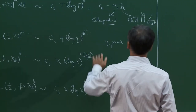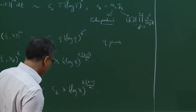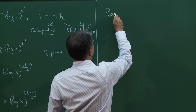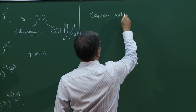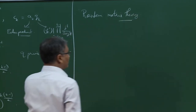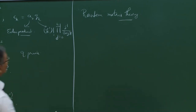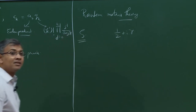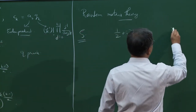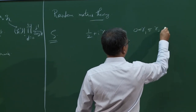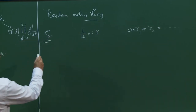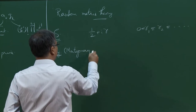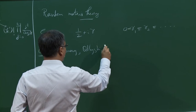There is also a connection between these moment conjectures and the distribution of zeros of L-functions and random matrix theory. For the zeta function, assuming the Riemann hypothesis, we write zeros as 1/2 + i*gamma_n arranged in ascending order. There is a conjecture going back to Montgomery, with numerics by Odlyzko and extensions by Rudnick and Sarnak, concerning the spacings between these zeros.